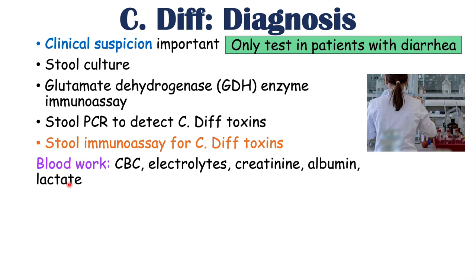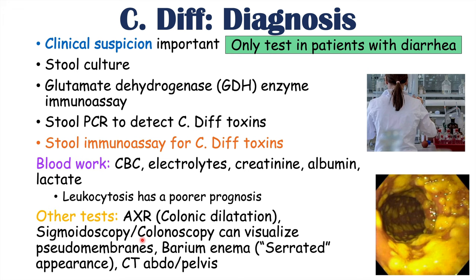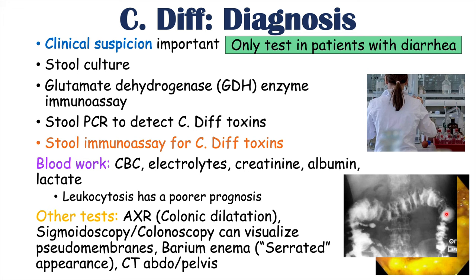A high white blood cell count or leukocytosis often leads to a poor prognosis. Other tests include abdominal X-ray, which can show colonic dilatation in toxic megacolon. Sigmoidoscopy and colonoscopy can visualize pseudomembranes — those yellow plaques within the colon — but should not be performed if colonic dilatation is present. A barium enema can show a serrated appearance in C. diff colitis. CT abdomen and pelvis can be utilized in more severe cases such as fulminant colitis.